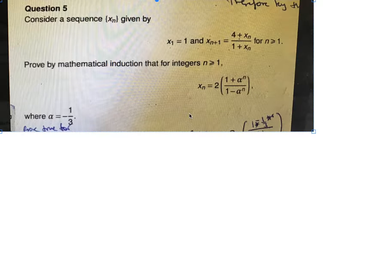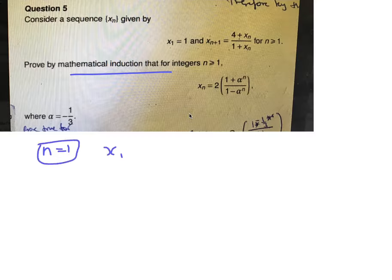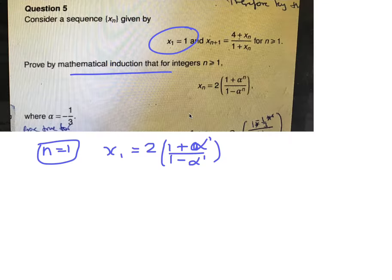So this is an induction question. What we need to do first of all is prove for n equals 1. So that means x1 has to equal 2 times (1 plus alpha to the 1) over (1 minus alpha to the 1). If we look up at the top, x1 is equal to 1.